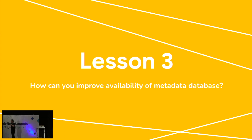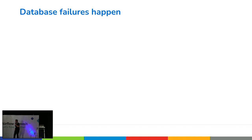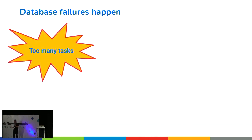Lesson three: how can you improve availability of the metadata database? This is actually the bigger chunk of the problem. Database failures happen for several reasons. One of the larger problems we've observed with customers is that too many tasks is a problem for the database.